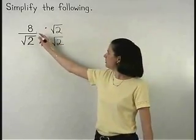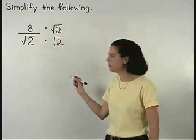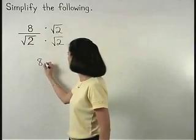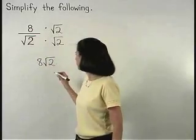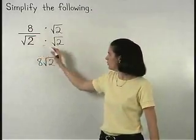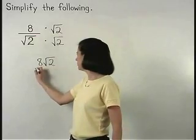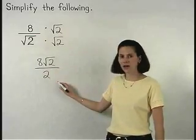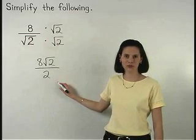On top, 8 times the square root of 2 is 8 root 2. And on the bottom, root 2 times root 2 is 2. So we have 8 root 2 over 2.